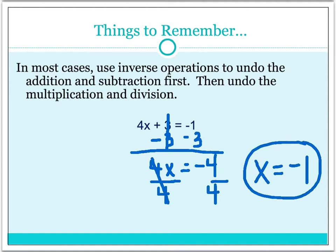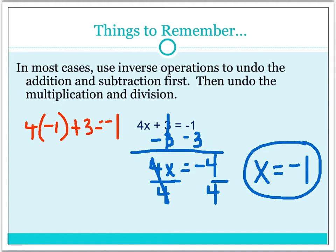Now if you want to check that this is right, you know the solution to an equation is the value the variable takes on to make the equation true. So if we wanted to check it, we would plug this negative 1 solution back in. I would have 4, plug in negative 1 for my variable, and continue with the rest of the equation. Negative 4 times negative 1 is negative 4, and negative 4 plus 3 is negative 1. They both equal negative 1, so we know our solution works.